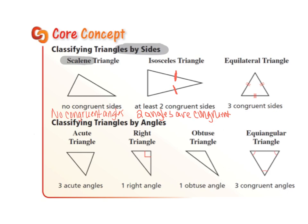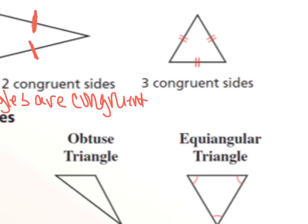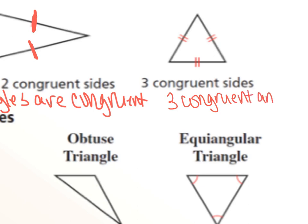And then finally, you have an equilateral triangle that has three congruent sides. You can see that all three have two tick marks, and it also has three congruent angles. Triangles always add up to 180 degrees, so if all of the angles are congruent, they're all going to be 60 degree angles.